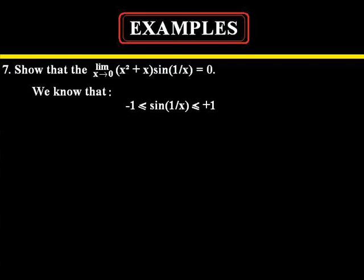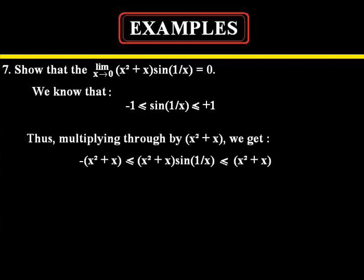Alright so sine of 1 over x bounded by negative 1 and positive 1. Okay so if we multiply sine of 1 over x by x squared plus x we're going to get negative x squared plus x less than or equal to x squared plus x sine 1 over x less than or equal to positive x squared plus x.